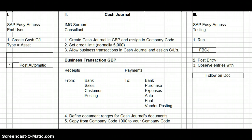The third thing in the creation of the cash journal is you have to test it. This is supposed to be done by the end user in the SAP Easy Access screen. In the Easy Access screen you would use the transaction code FBCJ, which enables you to actually test what you had configured in the cash journal. That is the three-step process for creating a cash journal.